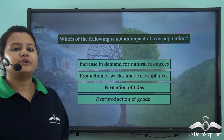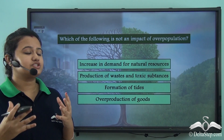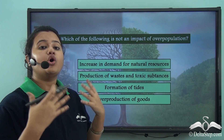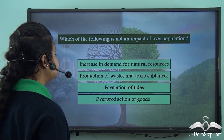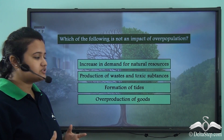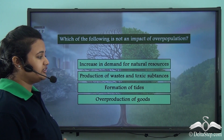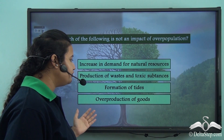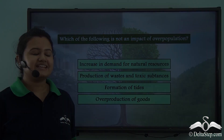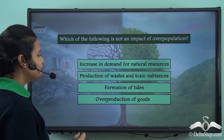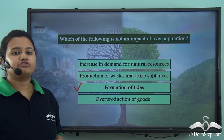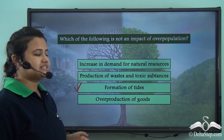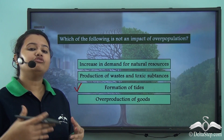Before we proceed, let us try to answer this question: Which of the following is not an impact of overpopulation? Is it increase in demand for natural resources, production of waste and toxic substances, formation of tides, or overproduction of goods? The correct answer is formation of tides. Formation of tides is not an impact of overpopulation, while the rest are different impacts of overpopulation.